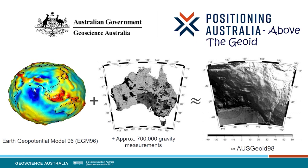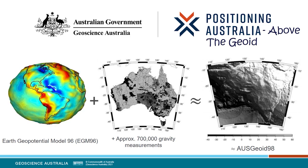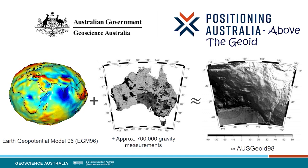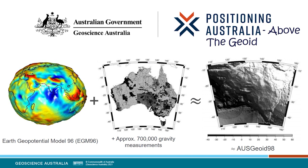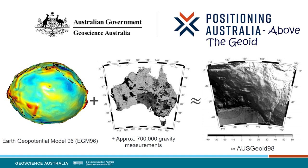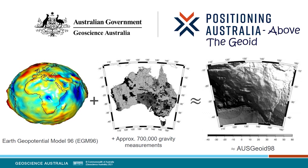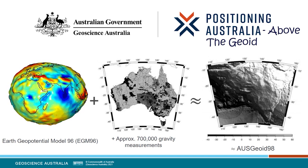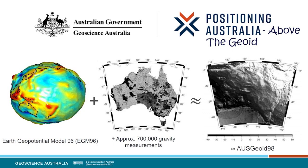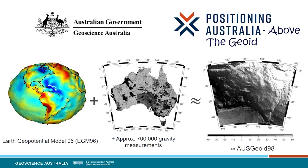There have been a number of these models released over Australia since the 1960s, but the oldest model that we still support at GA is AusGeoid 98. For AusGeoid 98, the global model used as the basis was Earth Gravity Model EGM-96, and this was enhanced regionally over Australia, mostly using data from the 1996 release of the National Gravity Database, and some satellite and ship-borne gravity data offshore. At the time, the database contained upwards of 700,000 individual gravity measurements. Over Australia, the difference between the ellipsoid and the geoid is between minus 40 and 80 metres.